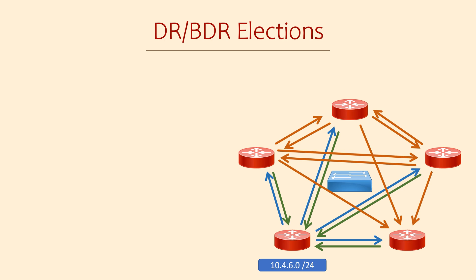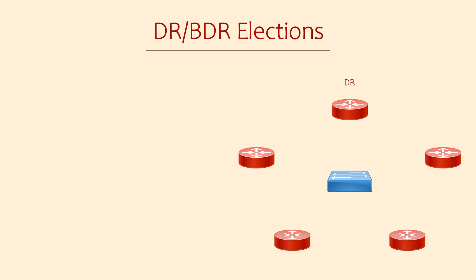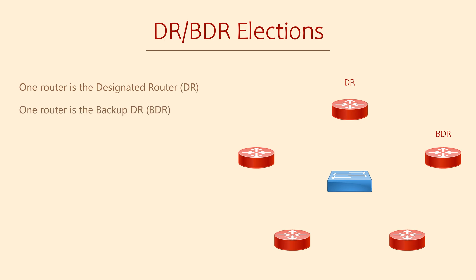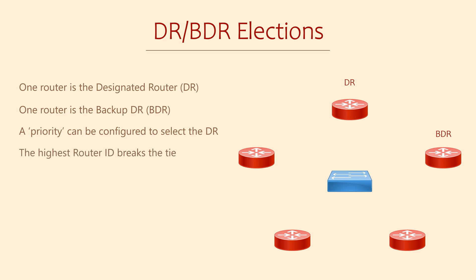But OSPF is smarter than that. For every broadcast network, OSPF will elect one router to be the designated router, or DR. It will also elect one backup designated router, or BDR. All other routers are called DROthers. Each OSPF router has a priority, which is set to 1 by default, and we can change the priority if we want to. The router with the highest priority becomes the DR, and the next highest is the BDR. If some routers have the same priority, like they do by default, the highest router ID breaks the tie.